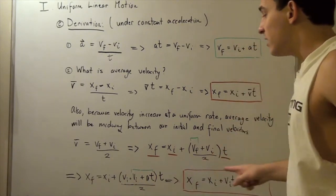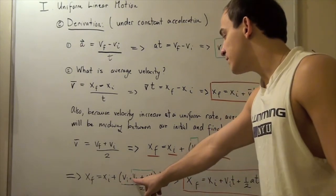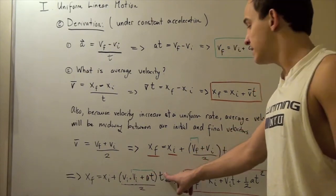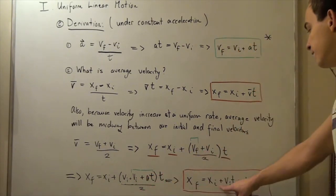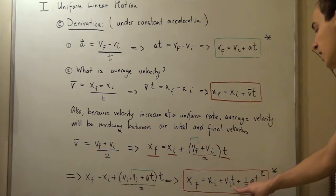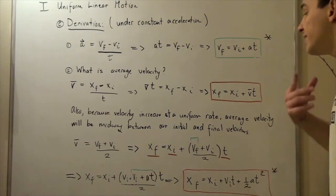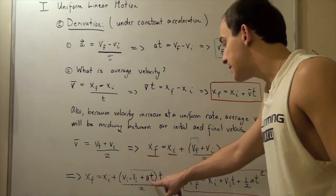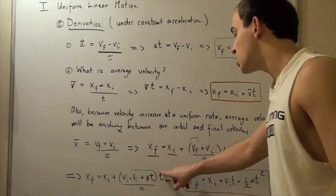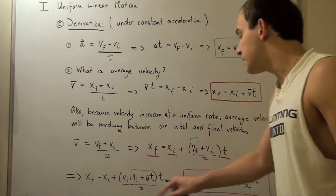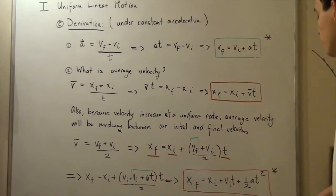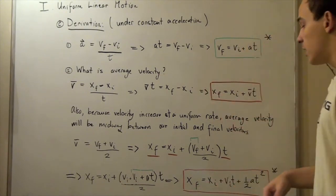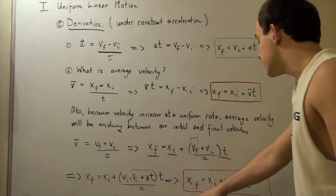Combining the two v initial terms and multiplying through, we get: x final equals x initial plus v initial times t plus one-half times acceleration times t squared. This is the third kinematic equation we were trying to derive.